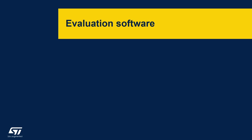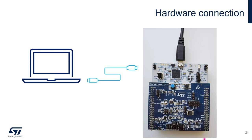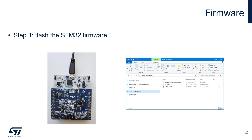It's time to use the evaluation software and show a demo of output signals from all channels. The evaluation software uses the Nucleo board, so you will need one ADC120 evaluation board, one STM32 Nucleo board, and one USB cable. Connect the ADC expansion board on top of the Nucleo board and connect to your computer via USB. Before using the Nucleo board, it needs the right firmware to interface the SPI with the ADC120 device. Step 1 is to flash the STM32 firmware.